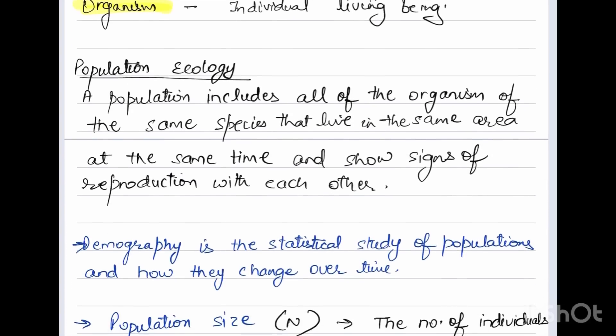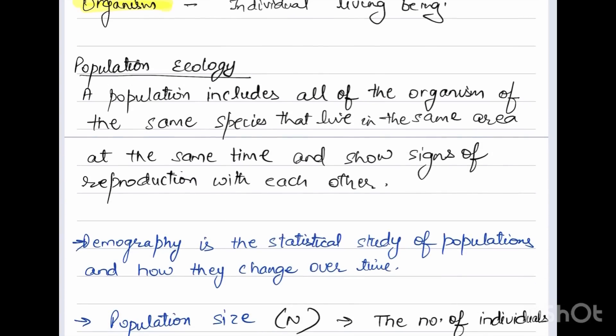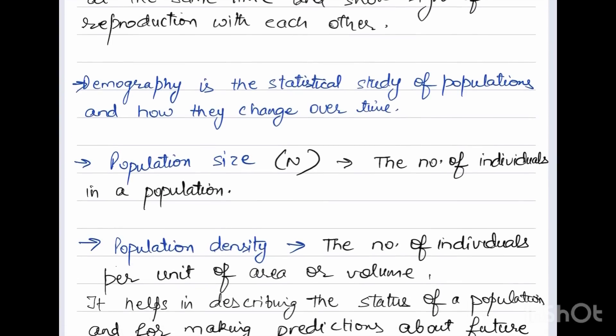Next we are going to start with population ecology. A population includes all of the organisms of the same species that live in the same area at the same time and show signs of reproduction with each other. Demography is the statistical study of populations and how they change over time.